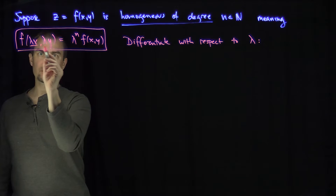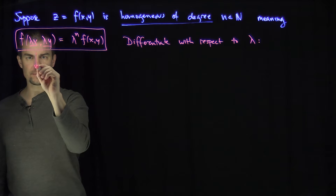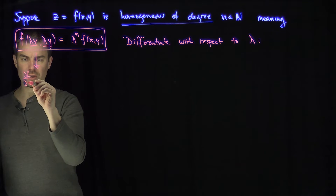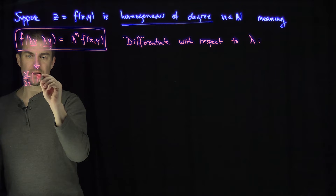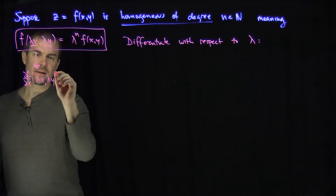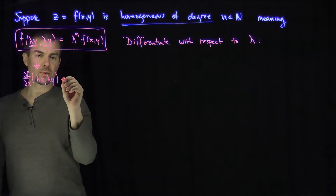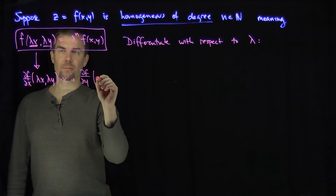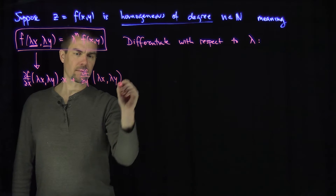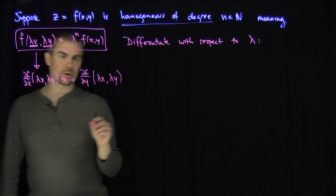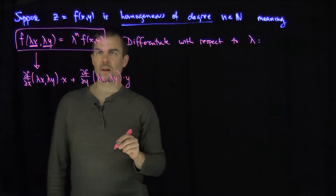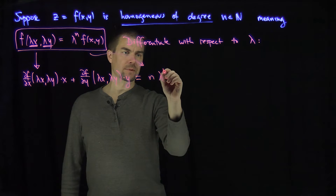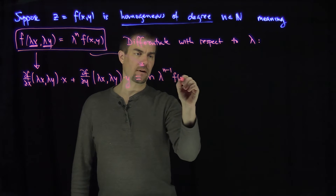This function f has a lambda dependence in the x variable and a lambda dependence in the y variable. Differentiating the left-hand side gives: partial f over partial x at (lambda x, lambda y) times x, plus partial f over partial y at (lambda x, lambda y) times y. Differentiating the right-hand side gives n times lambda to the n minus 1 times f(x, y).